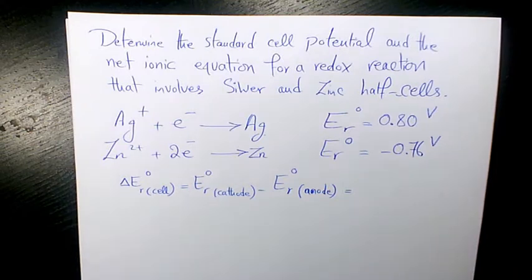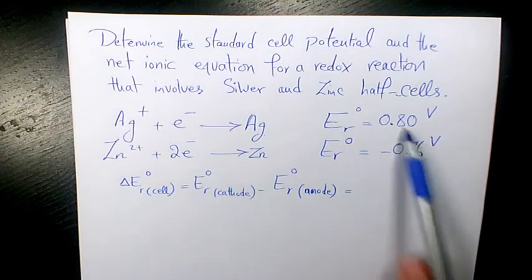Cathode is where reduction happens and anode is where oxidation happens. Reduction happens where we have the stronger oxidizing agent. How do we figure out which one is the stronger oxidizing agent?